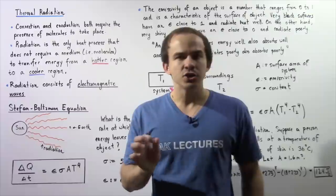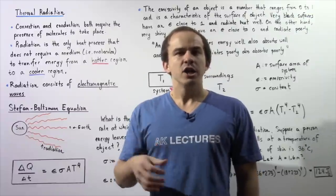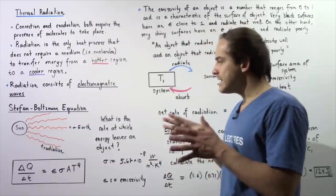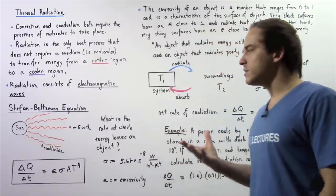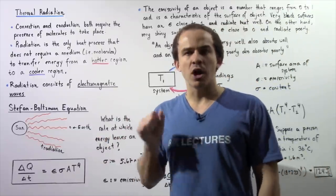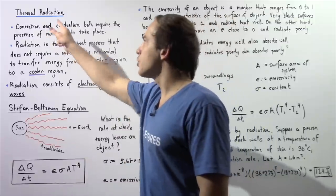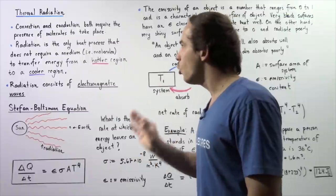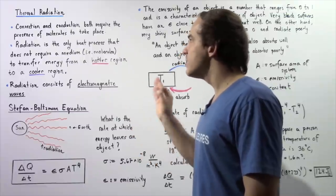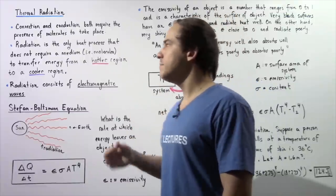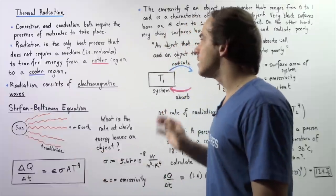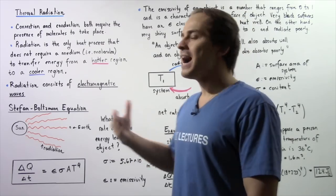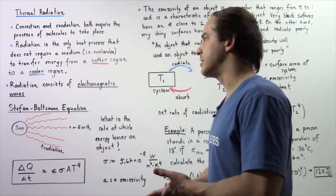Both convection and conduction require the presence of molecules and atoms to take place. In this lecture we're going to focus on the third type of heat process known as thermal radiation, or simply radiation. Radiation is the only heat process that does not require a medium — it does not require the presence of molecules and atoms to transfer energy from a hotter region to a cooler region.